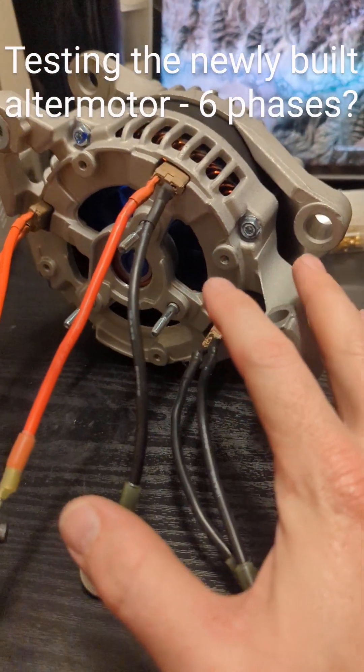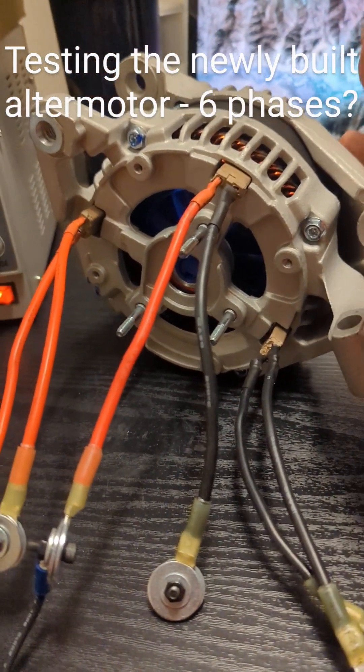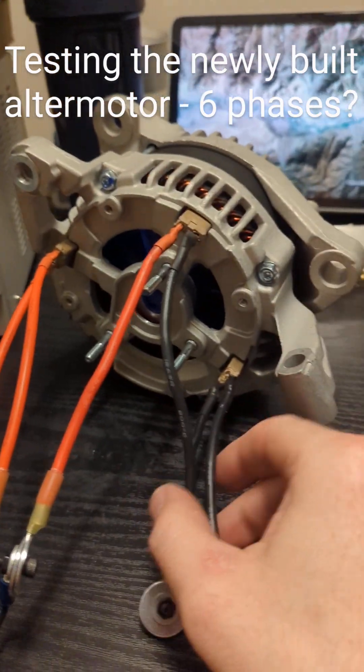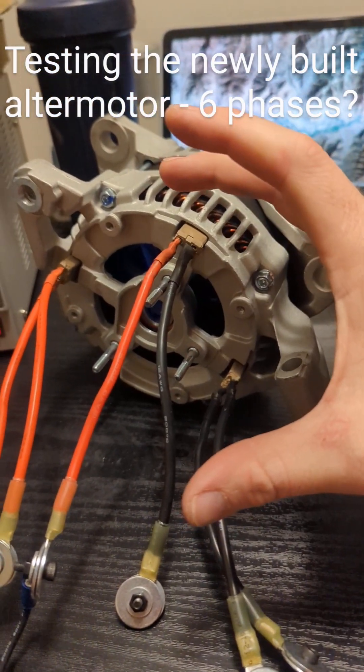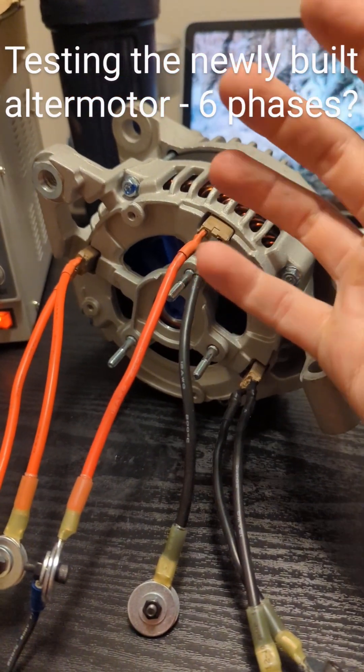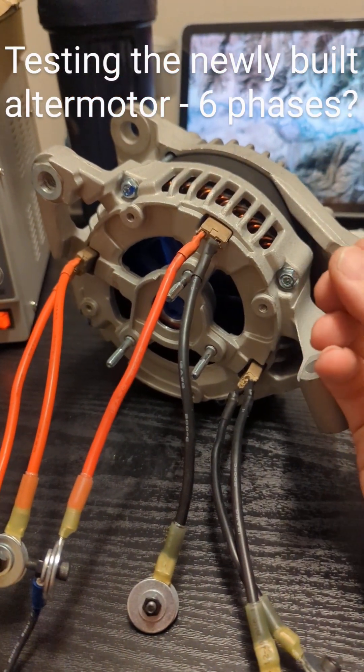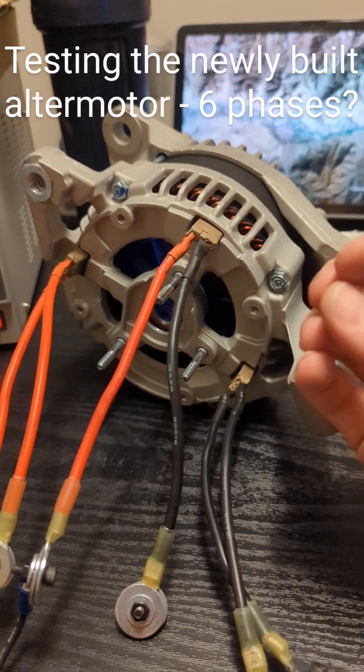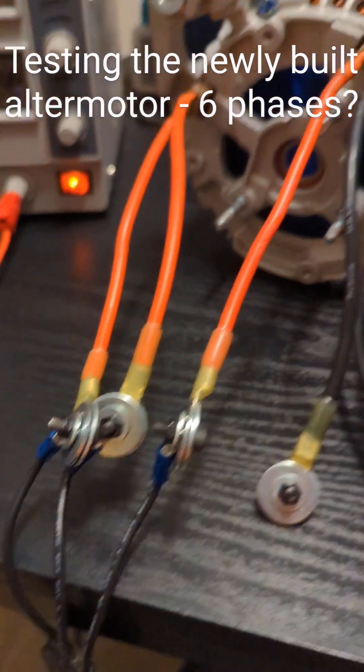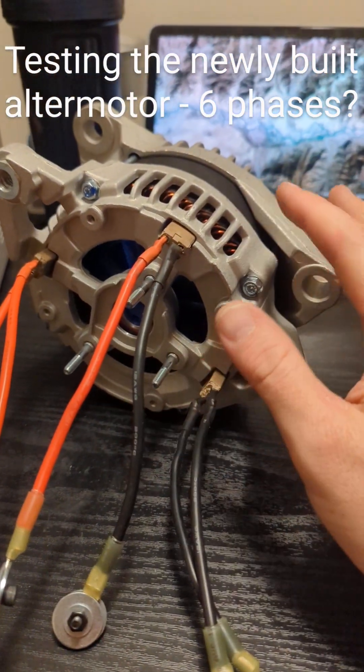This I believe is a six phase alternator. So it's pretty much just two groups of three phases, and those are going to be slightly offset from each other, and it supposedly makes much smoother power as an alternator. If we are able to control it with a speed controller, we could actually get a very smooth motor.